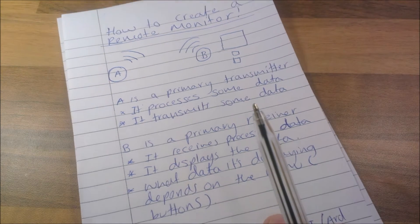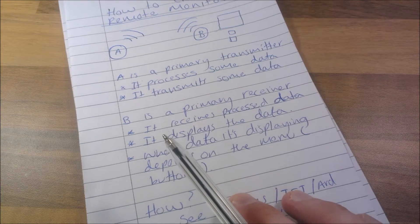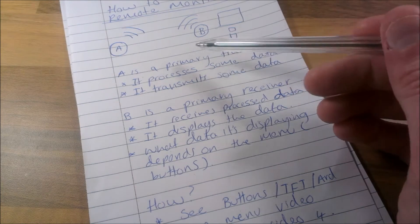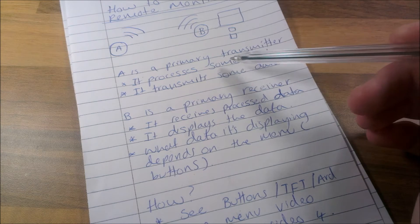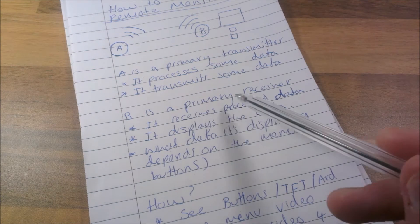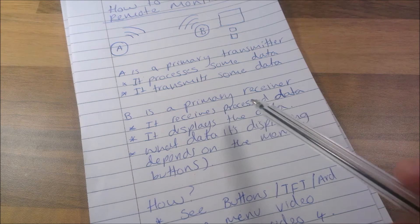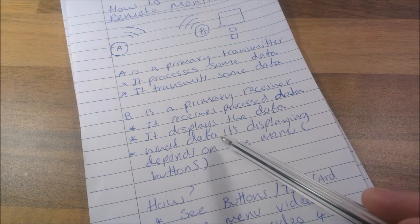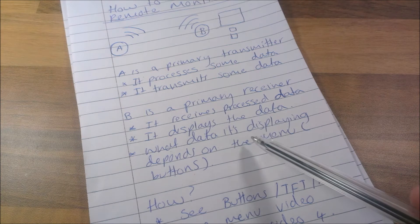So that's what I'm going to try and create now. A would be a primary transmitter—it processes some data and transmits it. B is a primary receiver—it receives processed data, displays data, and what data it's displaying depends on the menu.